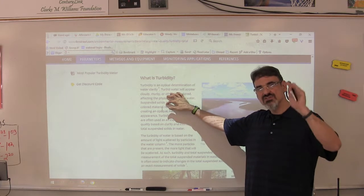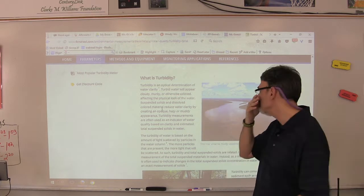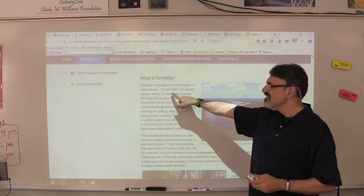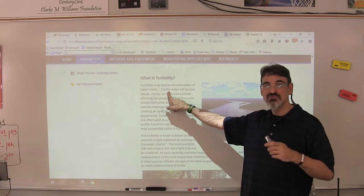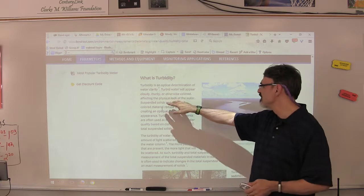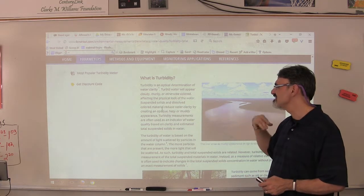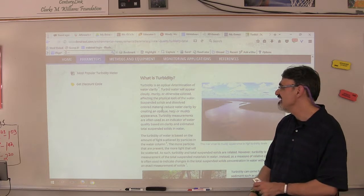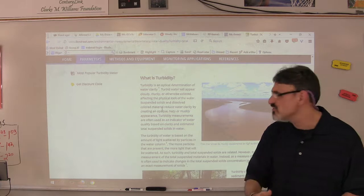The clearer the water is, the lower NTUs. The cloudier the water is, the higher. Another way to refer to cloudy water is turbid water. That's where the word turbidity came from. So turbid water appears cloudy, murky, or otherwise colored. It affects the way the water looks. Turbidity is the one you can see with your eyes.